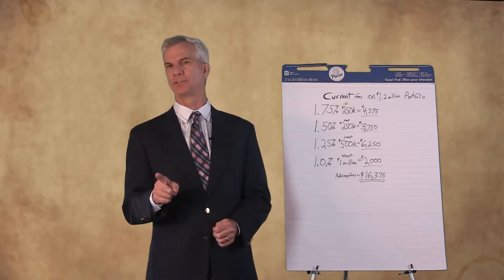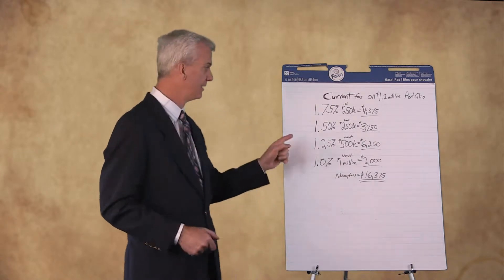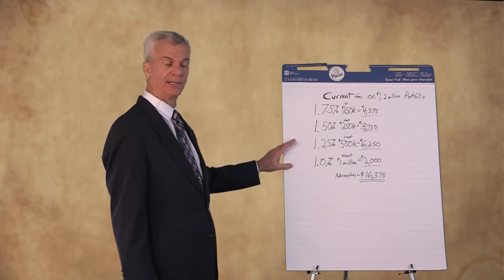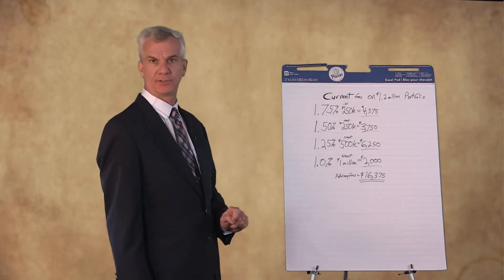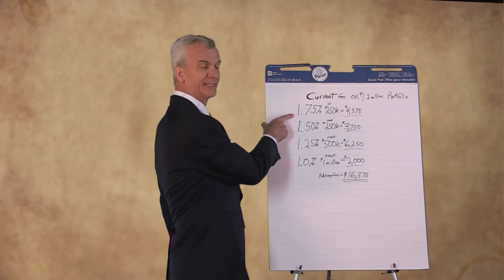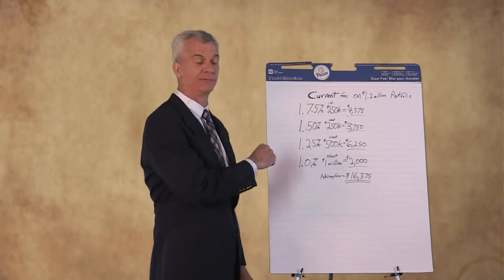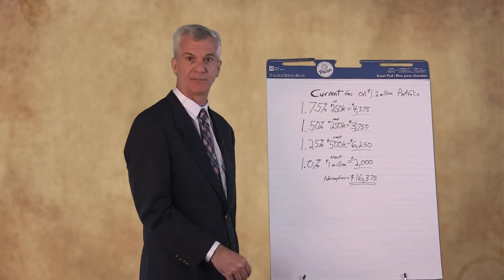Well, let's take a look at what those numbers actually were. So in this example right here, you'll notice that the current fees on this $1.2 million account, it's 1.75 percent on the first $250,000. That's $4,375.